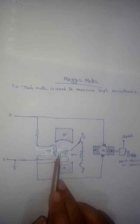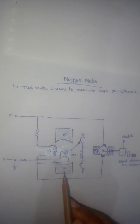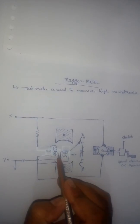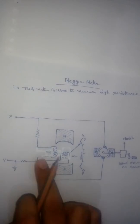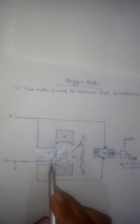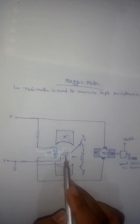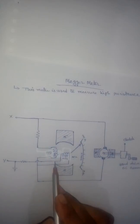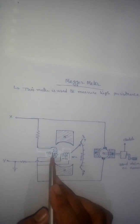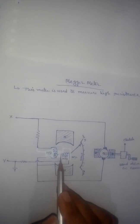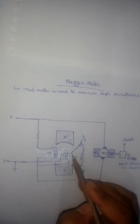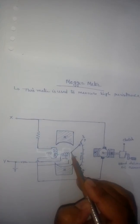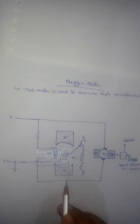These two coils are placed at 90 degrees displacement from each other. That means the axis of coil MC1 and the axis of coil MC2 have a 90-degree displacement between them. This is the pointer.